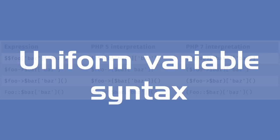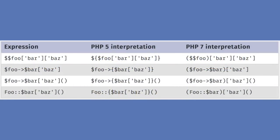Another key change in PHP 7 is the introduction of uniform variable syntax. This changes the way indirect access to variables, properties, and methods happens. As you can see in the table on screen, it enforces strict left-to-right evaluation. That's a big backwards compatibility break — code that used right-to-left evaluation will definitely have to be changed.